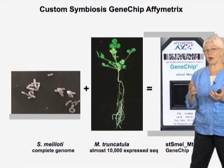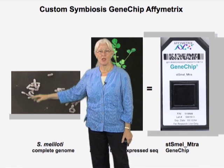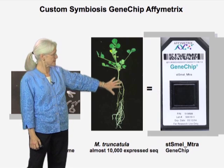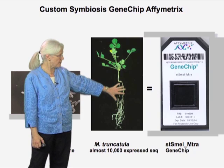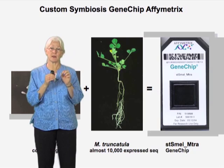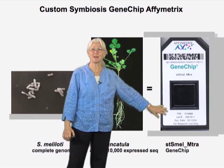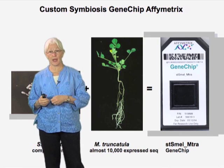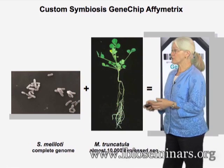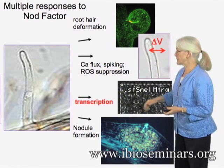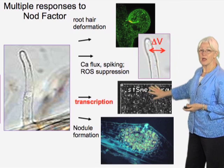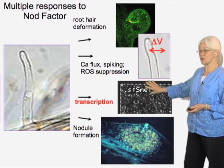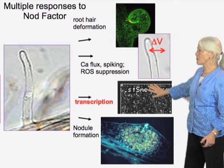One other topic I'll mention briefly is transcription. We've been able to assess transcription during nodulation at various stages with a specialized approach. Following our work on determining the complete genome sequence of the bacterium, we constructed an Affymetrix chip with the complete bacterial genome plus about 10,000 sequences representing probable genes from EST libraries in the plant — putting both genomes on the same chip. We call this our symbiote chip, and through analysis of RNA from nodules, we get a readout of both bacteria and plant simultaneously. Within the first 24 hours after treatment with nod factor or bacteria, a characteristic set of plant genes are upregulated or downregulated.